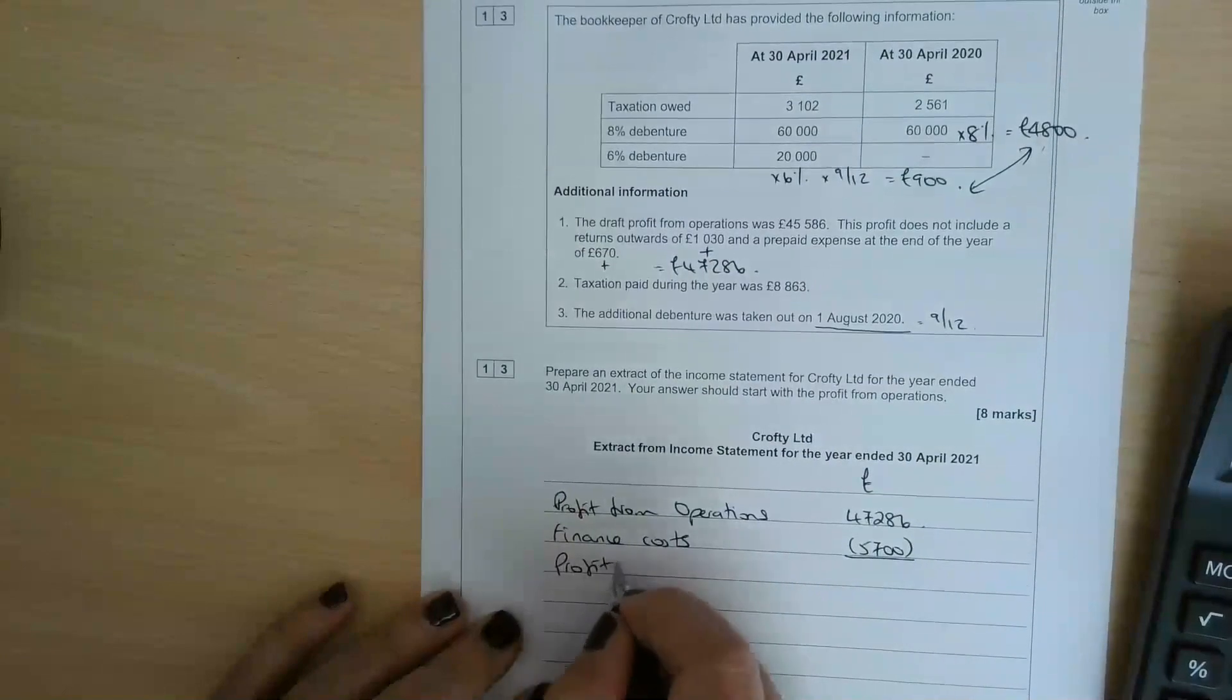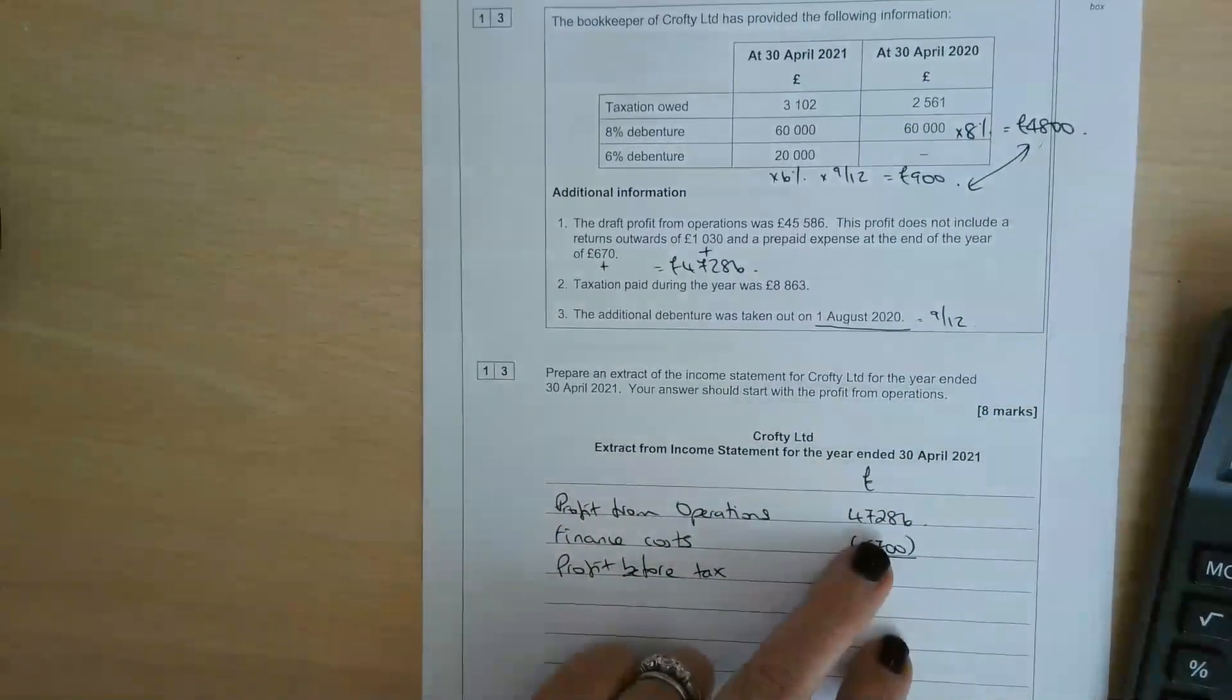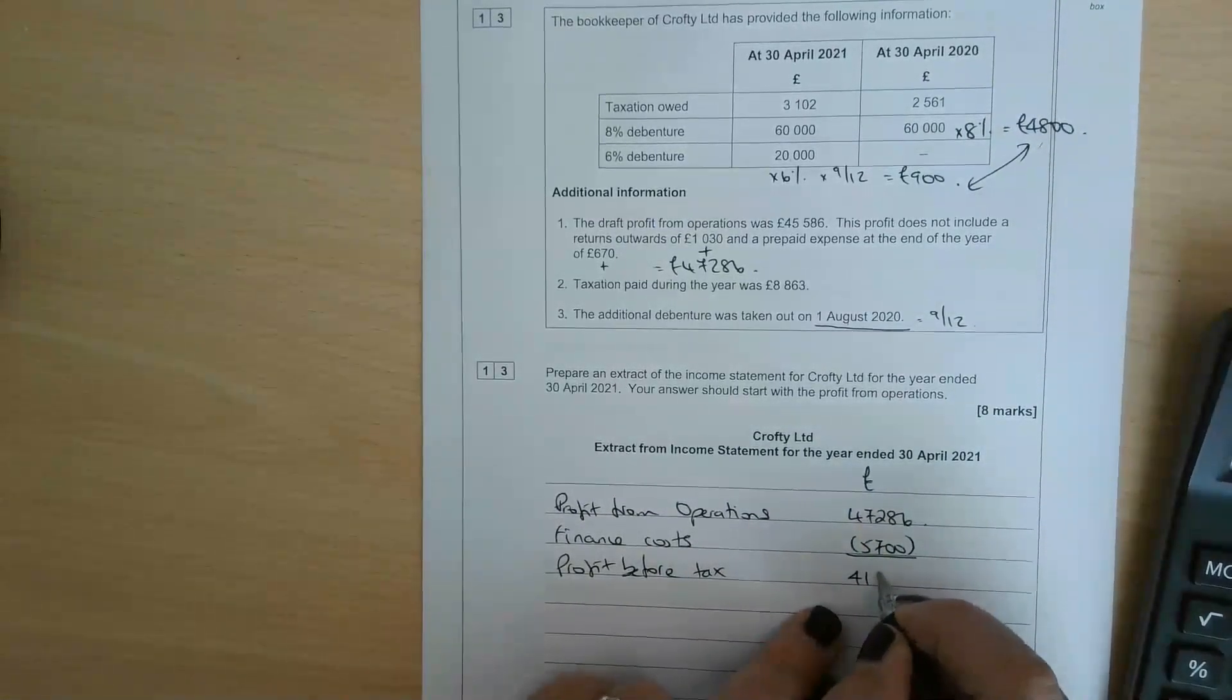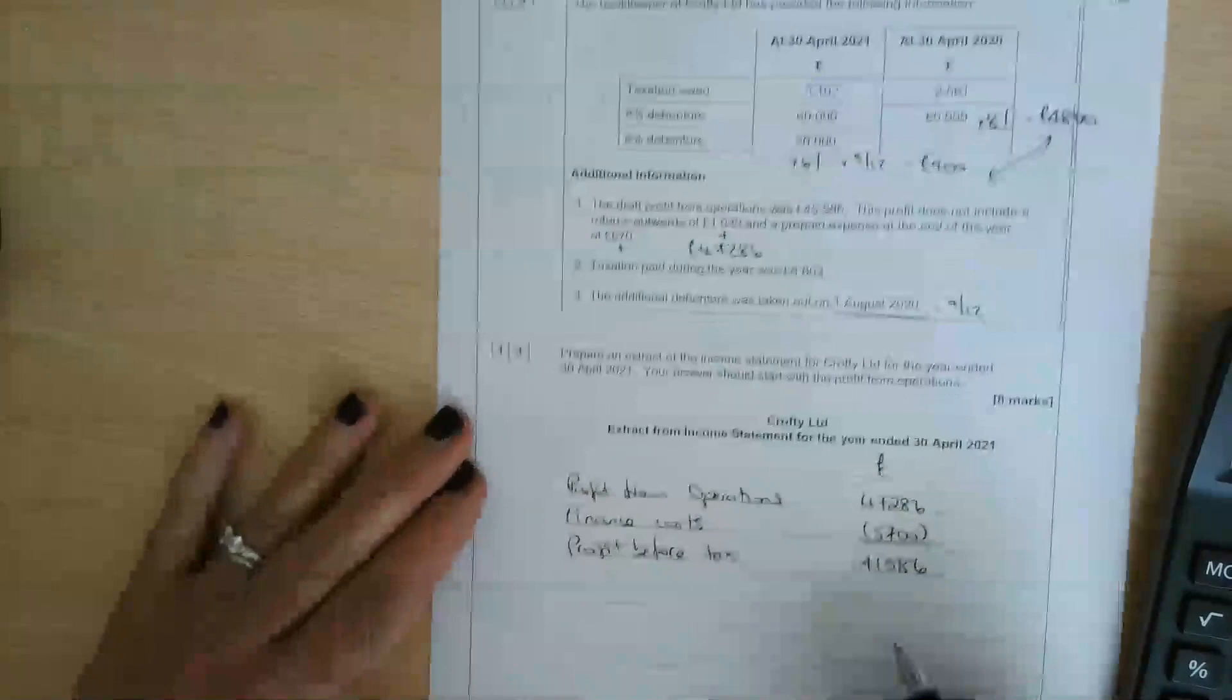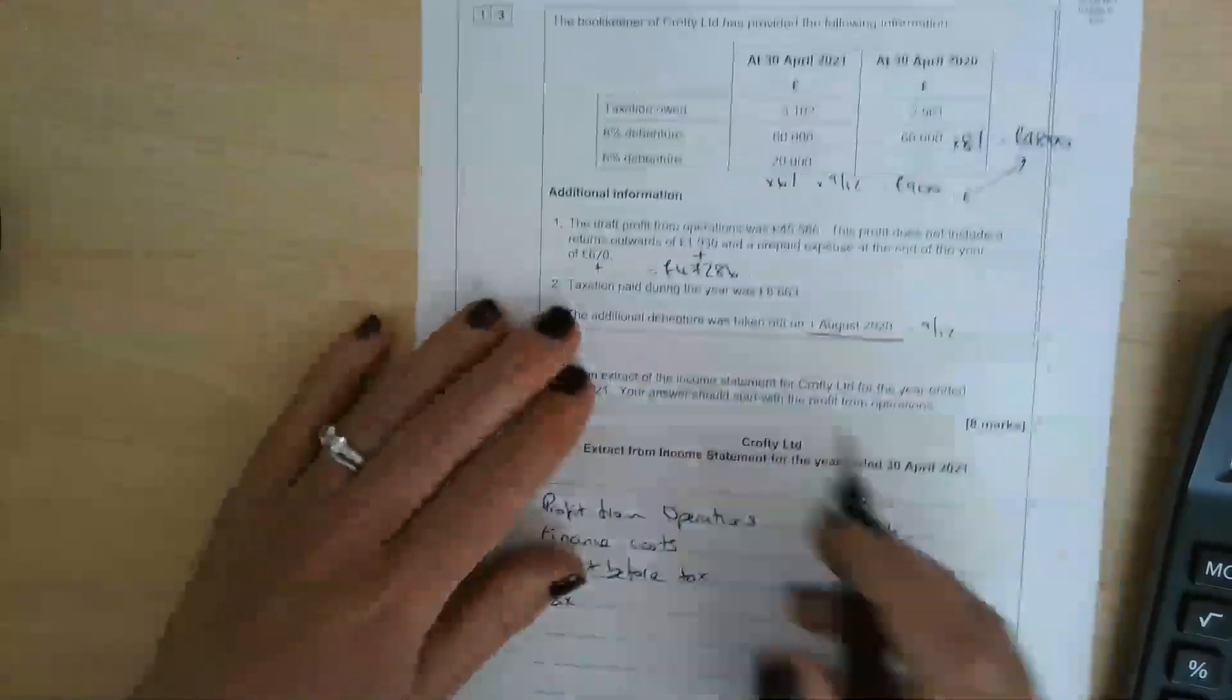That leaves us with profit before tax. The difference between those two, £47,286 minus £5,700, is £41,586. Then we can sort out the tax. The tax paid during the year was £8,863. I suggest we do a little T-account here.